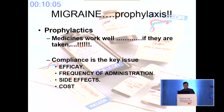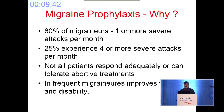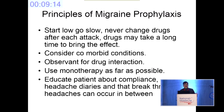Prophylaxis is important because you have to bring down frequency to a desirable level. The medicines work well provided they are taken, and compliance is the key issue. Compliance is decided by efficacy, frequency of administration, side effects, and cost of the medication. It is important to understand that migraine prophylaxis is very important because 60% of migraineurs will have one or more severe attacks per month, and one fourth will have four or more severe attacks per month. Not all patients can adequately tolerate or respond to abortive medicines. The principles are: start low, go slow.